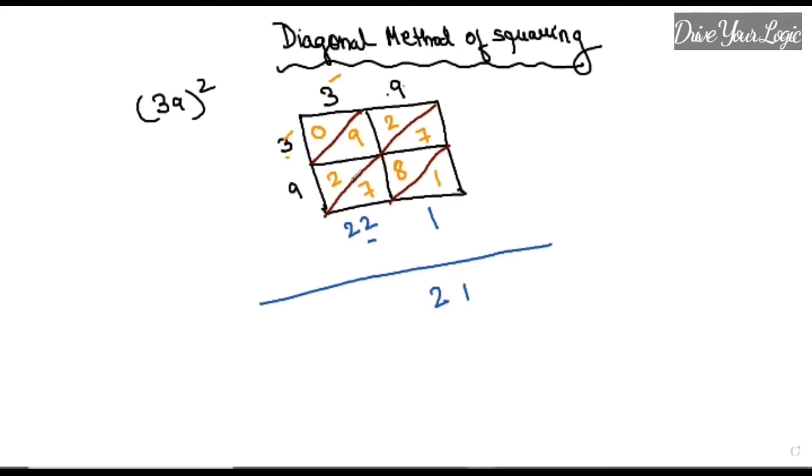Next line you add 9 plus 2 plus 2, your answer is 13, and this 2 will be carried forward here so it will be 15. This 5 will be taken as the answer and 1 will be carried forward here. But here it is only 0, so 0 plus 1 is 1, and here comes 1. Therefore, 39 squared equals 1521.